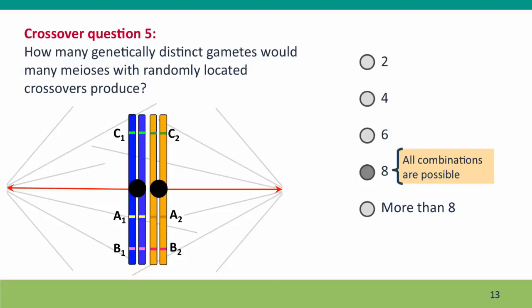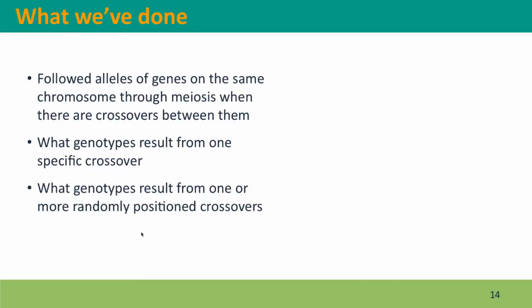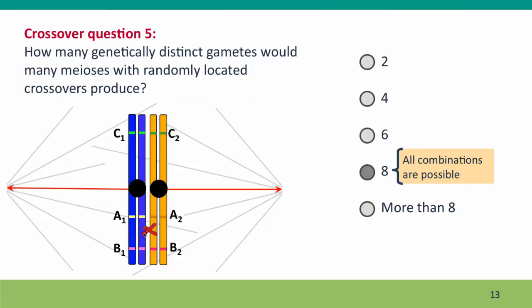Now, all eight combinations are possible. I'll show you the different ways that these eight combinations could arise. We could have, as we had in the previous problem, a crossover in this interval, but we could instead have a crossover in this interval, or we could have a crossover in both intervals, or we could have any combination of crossovers. We could have one crossover in that interval between those two chromosomes and another crossover in that interval between those two chromatids. All of these are possible, but because there are only three genes, each with two alleles, there are only eight possible combinations altogether.